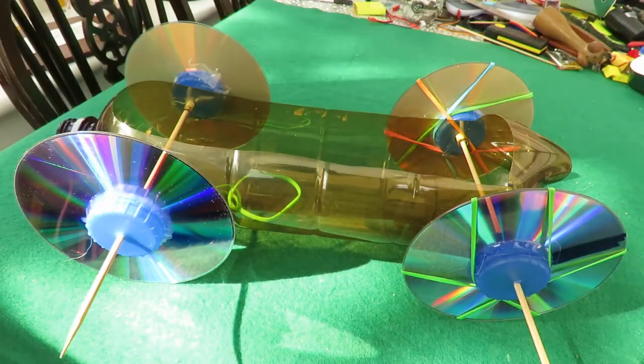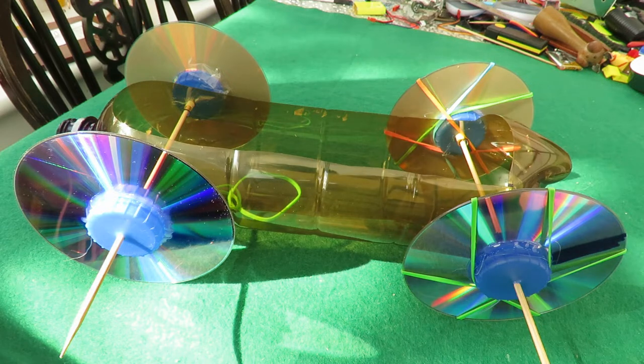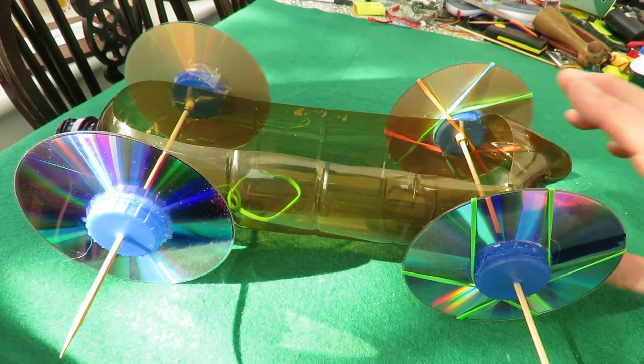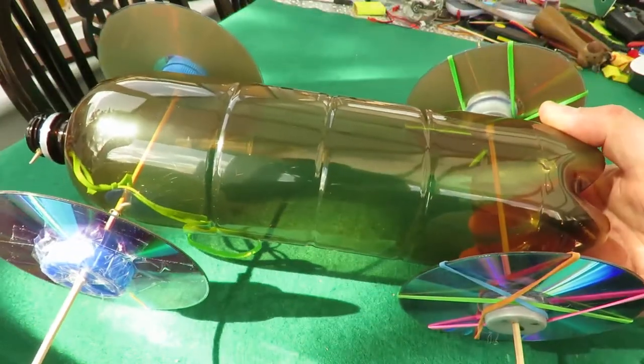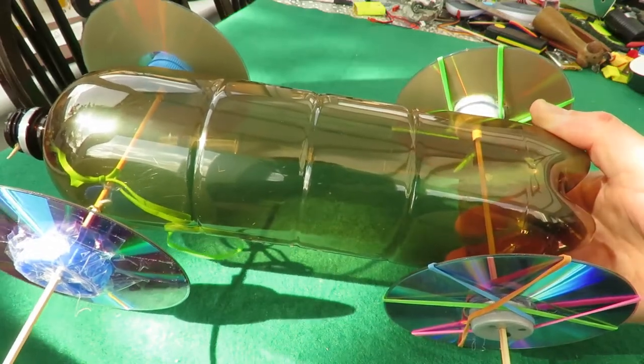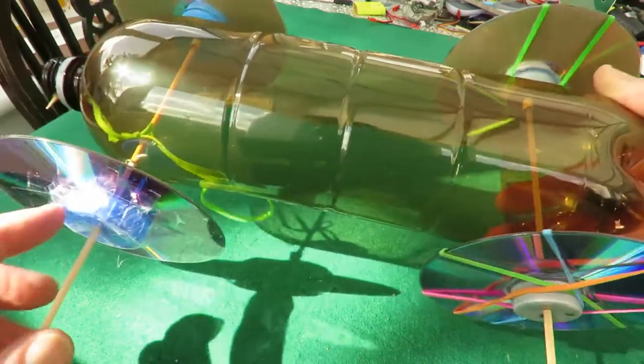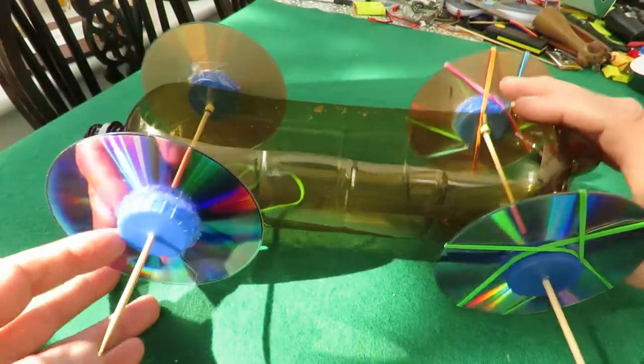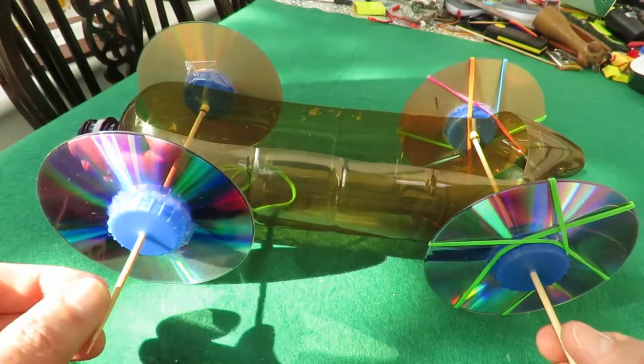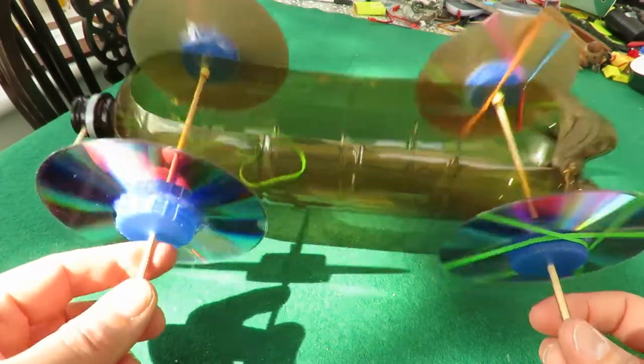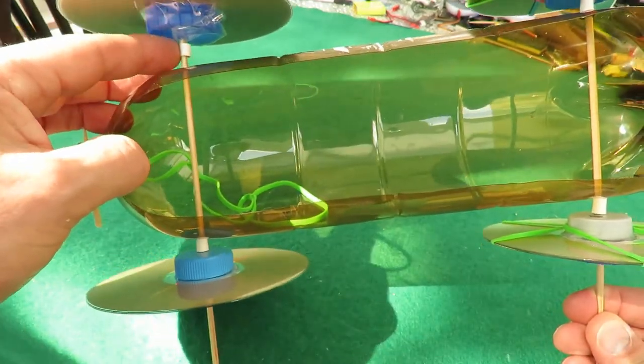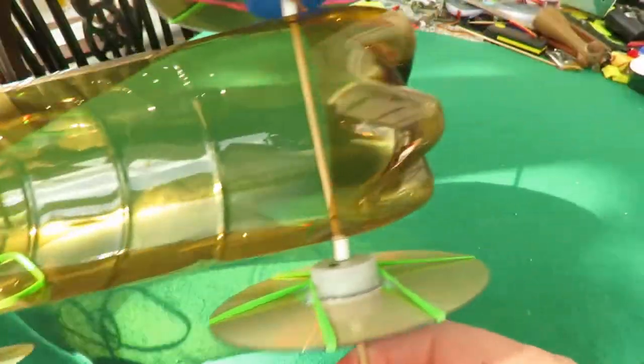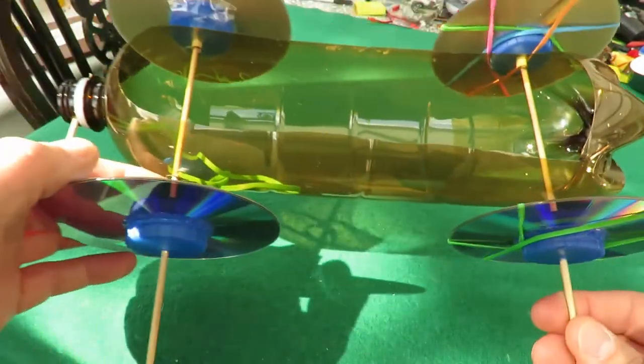Summary time. What have we got? We've got a rubber band powered car made from a plastic pop bottle, four CDs, eight plastic bottle caps, two barbecue skewers, and a little bit of drinking straw there to act as spacers on all the sides.